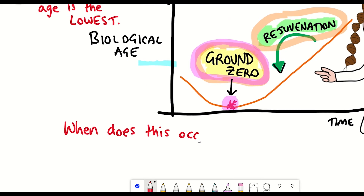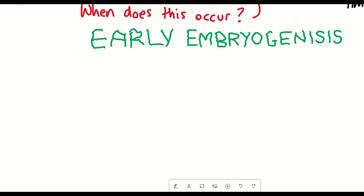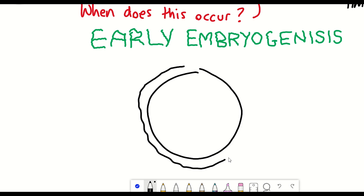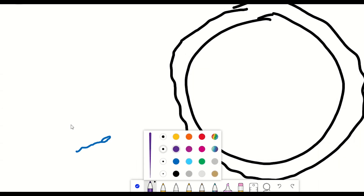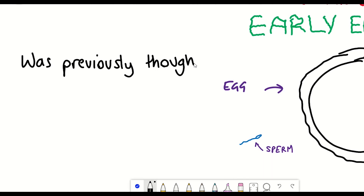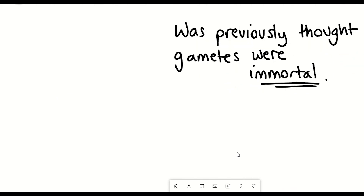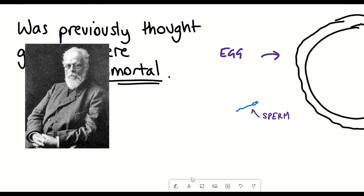So when does ground zero actually occur? To understand this, we need to talk about what happens during early embryogenesis. The best place to start is conception, when the egg is fertilised by the sperm. Interestingly, it was initially thought that your gametes — the sperm and egg — were immortal. This idea dates back to the 19th century when August Weissmann proposed the separation of the ageless germline and the ageing soma.